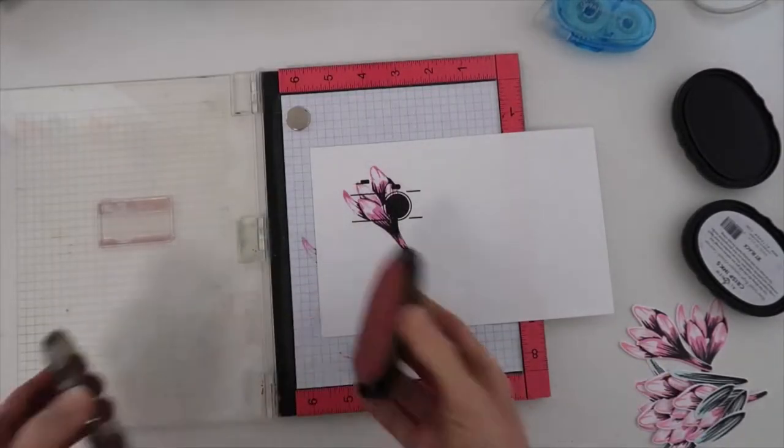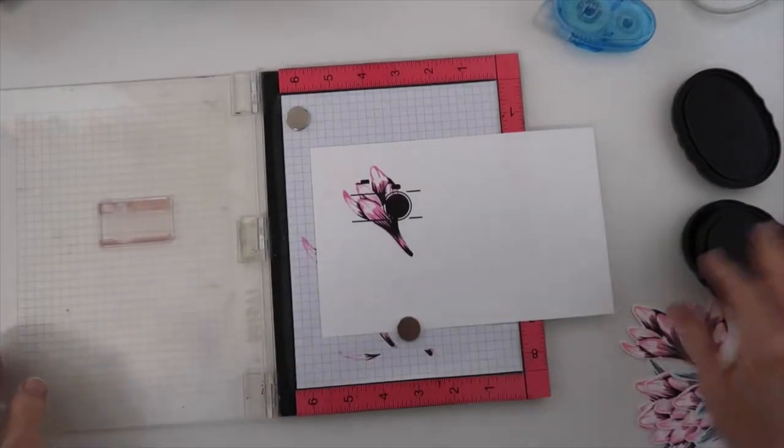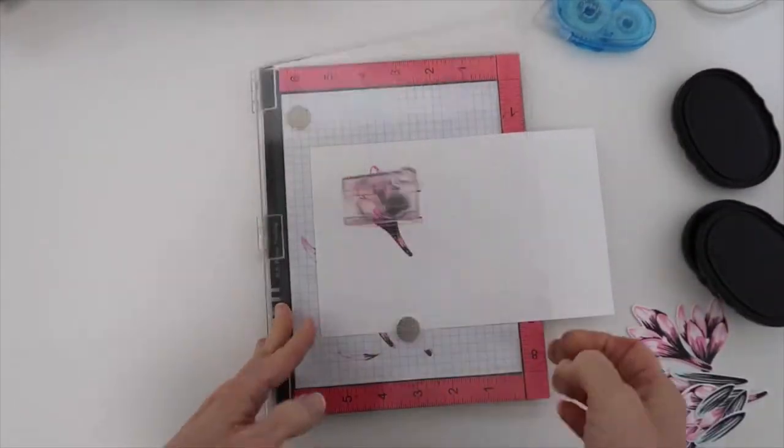Now I do want to have the actual image of the camera, so I'm using the two layers of this stamp set here.